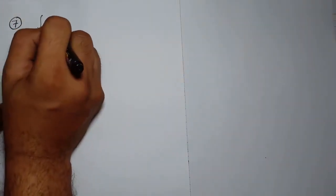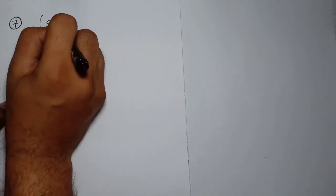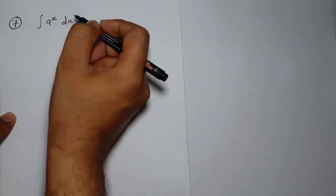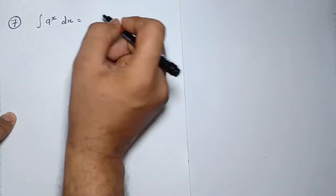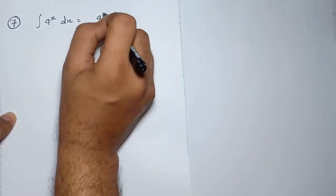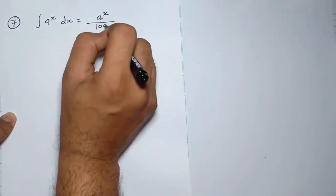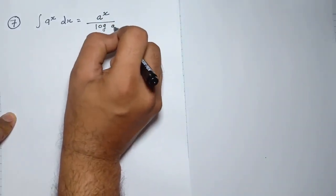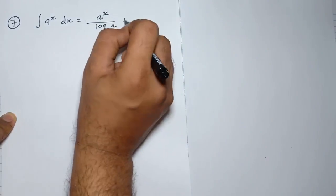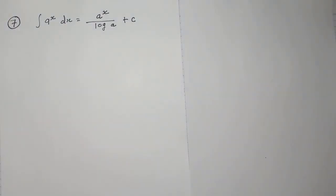Now we are going to solve rule number 7. Rule number 7: the integration of a raised to x dx — its answer is a raised to x divided by log a plus c.